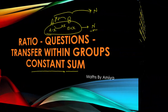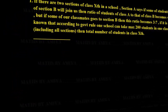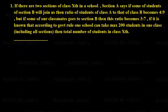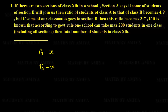Question one: there are two sections of class 10th in a school. Section A says if some students of section B join us, the ratio of students of class A to class B becomes 4 is to 9. So if x students from B join A, A becomes A plus x and B becomes B minus x, giving ratio 4 to 9.